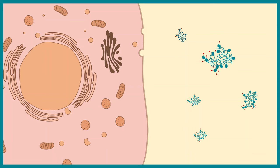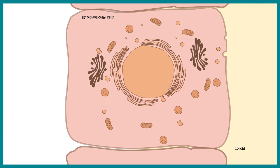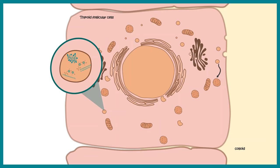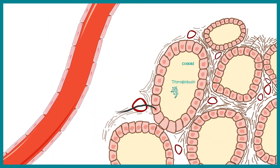When there is a need for thyroid hormone secretion, the iodinated thyroglobulin is taken back up into the thyroid follicular cells by pinocytosis — pinocytotic vesicles engulf the thyroglobulin. Once inside, lysosomal proteases cleave and chop off the iodinated tyrosine residues from the chain, freeing them to be secreted into the bloodstream.